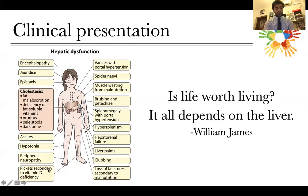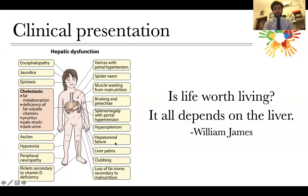Hypotonia and peripheral neuropathy are related to the chronicity of the disease. Varices occur because of high blood pressure within the portal circulation, causing blood to shunt toward the spleen, leading to hypersplenism and splenomegaly with portal hypertension. Bruising and petechiae relate to coagulation problems. Spider nevi occur due to impaired estrogen destruction, which normally happens in the liver. Muscle wasting is due to malnutrition. Hepatorenal and hepatopulmonary syndromes result from liver failure causing multi-organ failure. Clubbing and liver palms occur with chronic disease, and loss of fat stores is secondary to malnutrition.